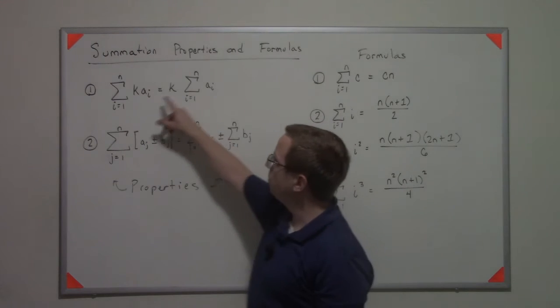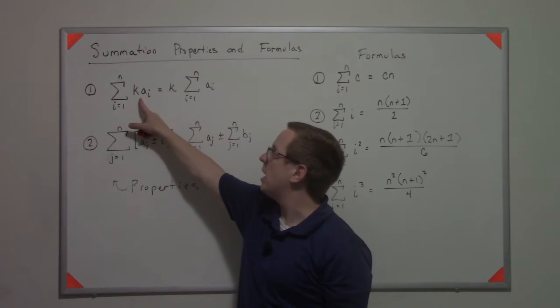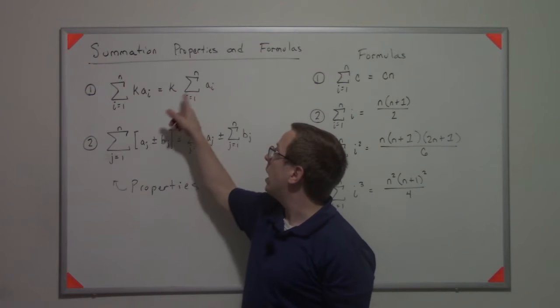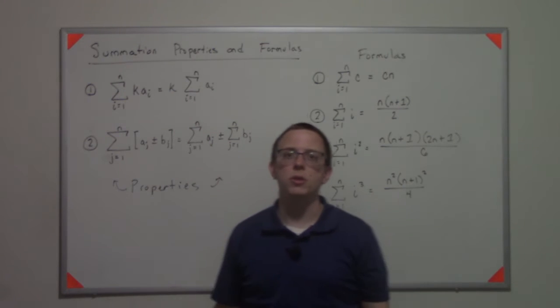The first one is that if I have some sort of constant times a sequence, I can pull the constant out of that sum.